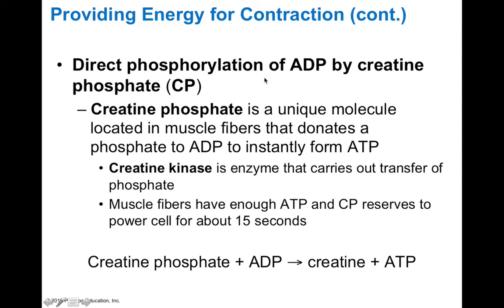Phosphorylation by creatine phosphate involves a unique molecule found within muscle fibers that donates a phosphate group to ADP to instantly form ATP. The enzyme that carries out this transfer is called creatine kinase. Muscle fibers have enough ATP and creatine phosphate reserves to power cells for about 15 seconds. Once the free ATP is depleted within the first five to six seconds, creatine phosphate can phosphorylate ADP into ATP.